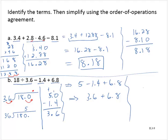And now taking care of the addition, 3.6 plus 6.8. Bring down the decimal point, 6 plus 8 is 14, carrying the 1, that's 10.4.